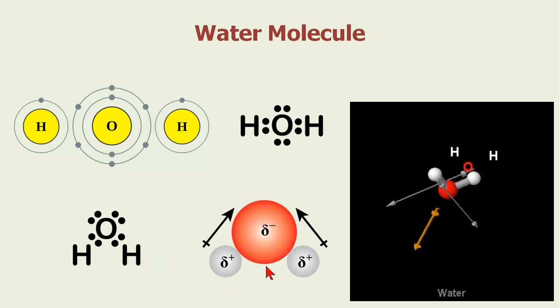As we look at the dipoles, we can see they go from hydrogen to oxygen, hydrogen to oxygen. They both are forming a vector which results in a polar molecule.